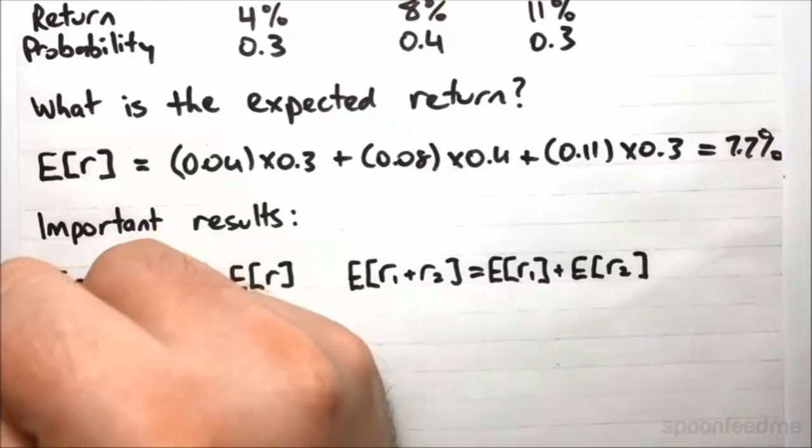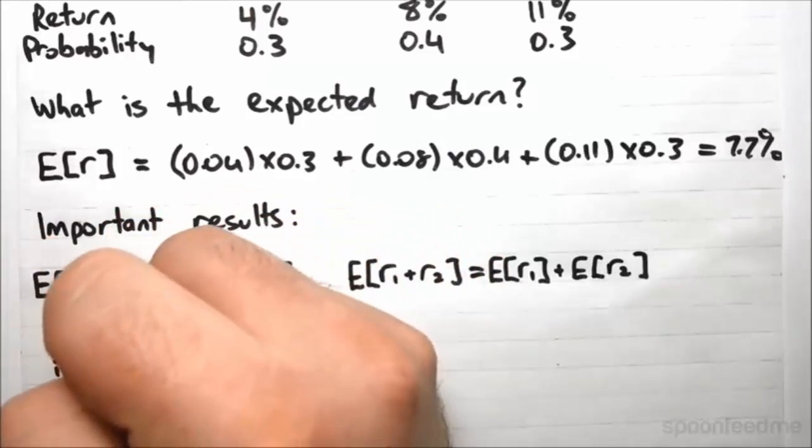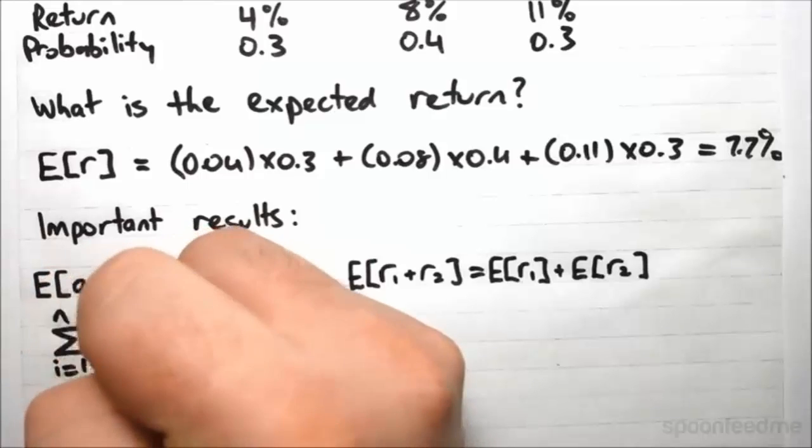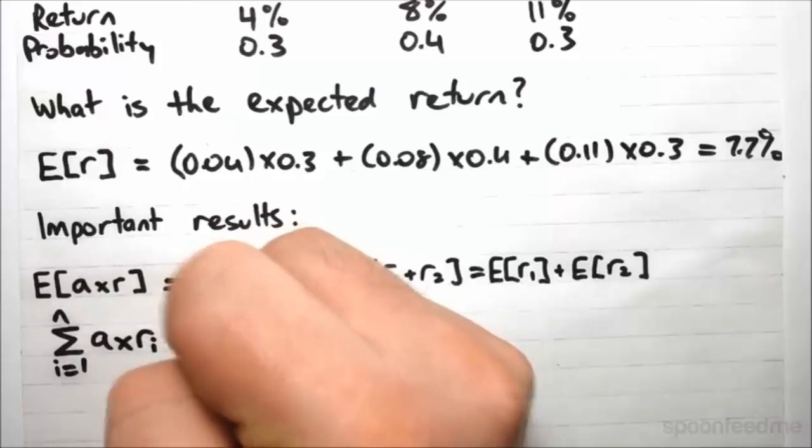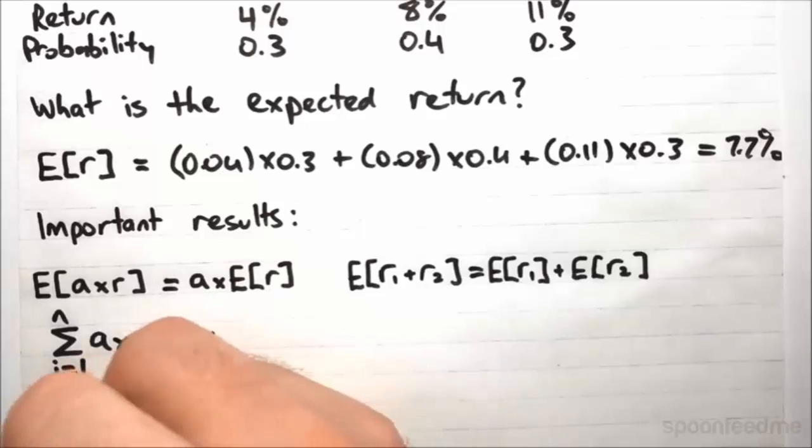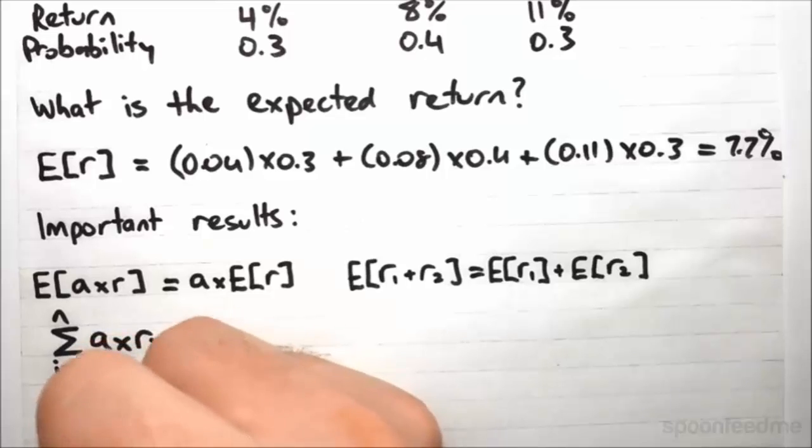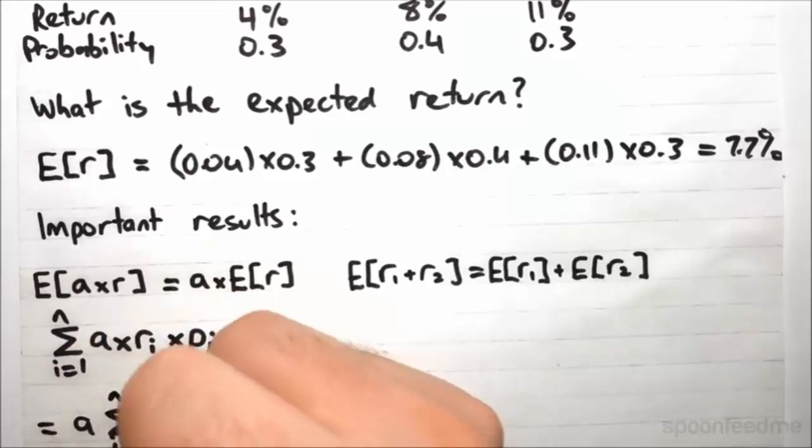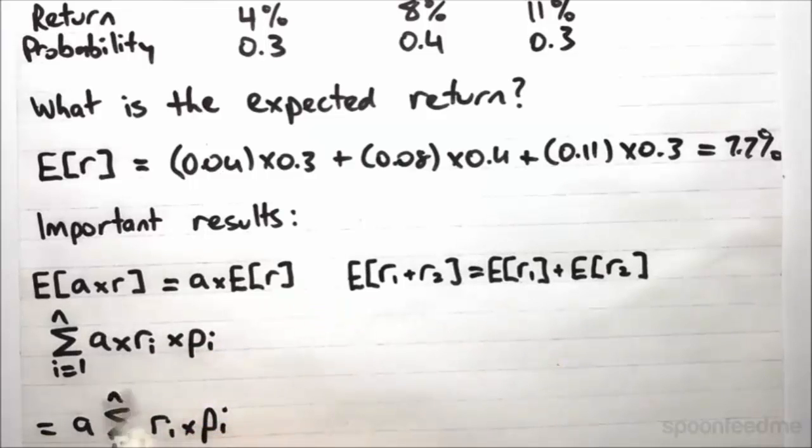So we've got the weighted sum of the return, or in this case A times the return, multiplied by the associated probability. And since you're multiplying A by every element of the sum, that's the same as multiplying A by the entire sum, so you can just pull this out and get A times the weighted sum. And that's just the expected value, so two steps you're done.